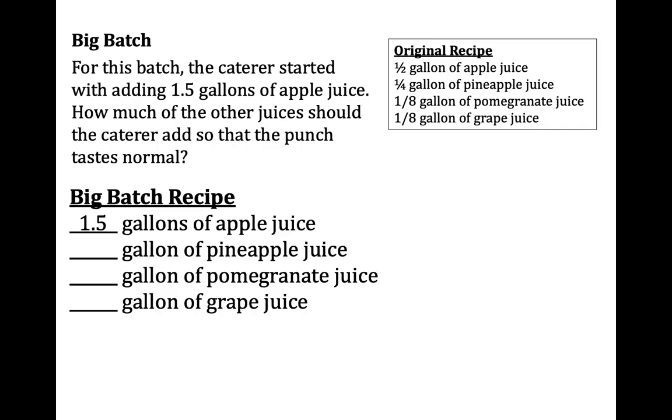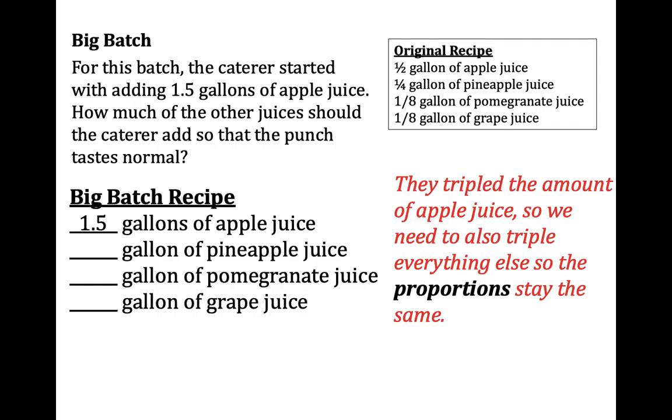You'd actually have more grape juice as a total fraction of the juice. So the correct way to do this, the right way, is to use proportional reasoning. They tripled the amount of apple juice going from a half gallon to 1.5 gallons. So we also need to triple everything else. We're not adding a specific amount, but we're changing it by a factor. In this case, the factor is three, so all the proportions will stay the same. So the ratio between any of these numbers in the original recipe will be the same as the ratio between any of these numbers in the big batch. I just need to triple all the numbers, so that's going to give me three-fourths of a gallon for pineapple juice, three-eighths and three-eighths for the other two.